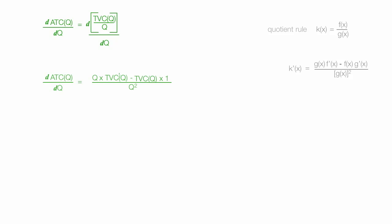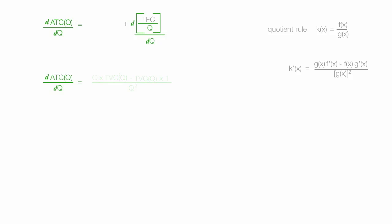Now I'm going to do the other part. f(x) is total fixed cost — the numerator — and g(x) is the denominator, that Q. So I add the plus sign: g(x), which is Q, times the first derivative of total fixed cost, which is 0 — it doesn't change as quantity changes — minus f(x), which is total fixed cost, times the first derivative of g(x), which is 1 again. Take all this divided by g(x) squared, which is Q squared.